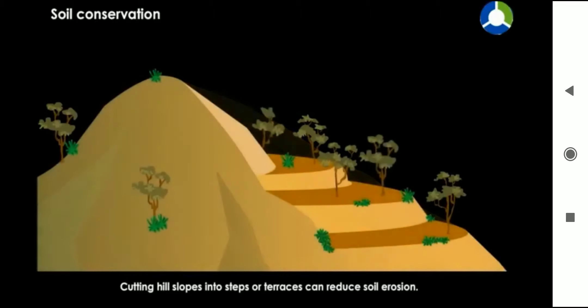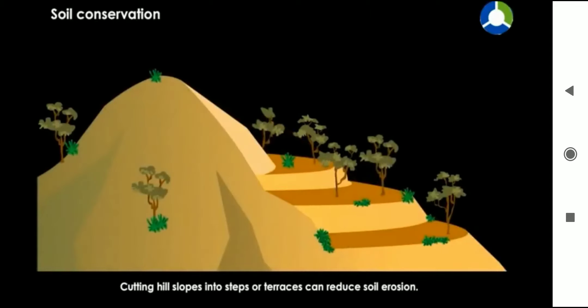Cutting hill slopes into steps or terraces can reduce soil erosion. This is called terraced farming. Here the steps slow down the flow of water.